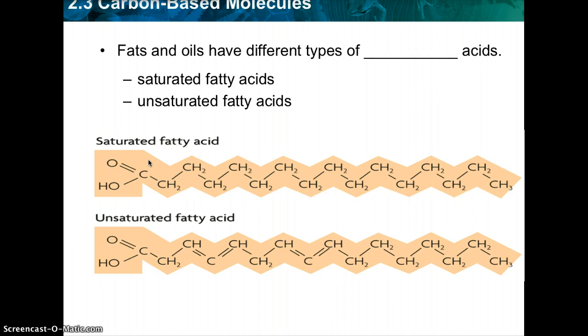Unsaturated fatty acids have at least one carbon to carbon double bond. As you can see down here, there's a double bond here, there's a double bond here, and then there's another carbon to carbon double bond. So that's what makes it an unsaturated fatty acid. And those are liquid at room temperatures.